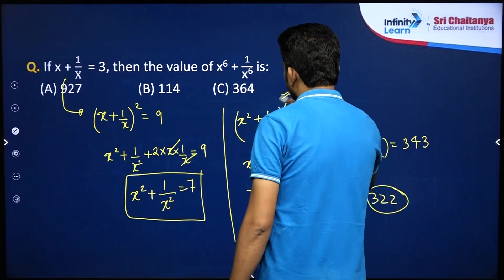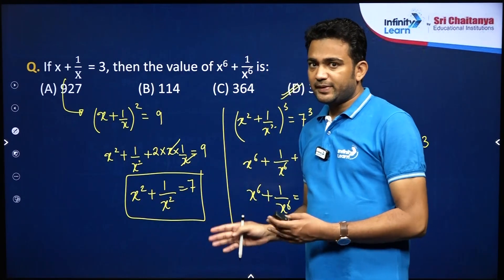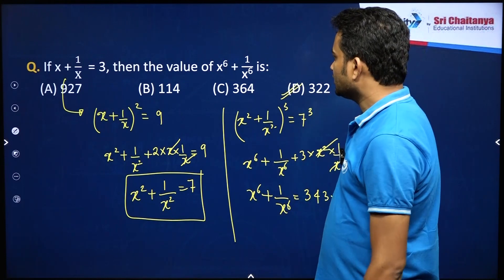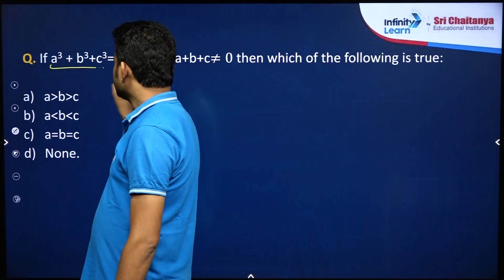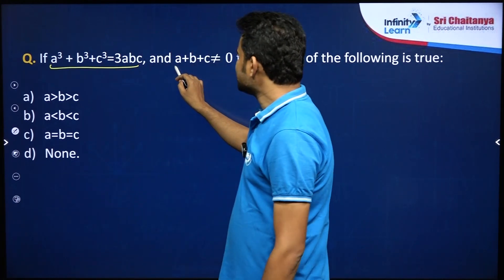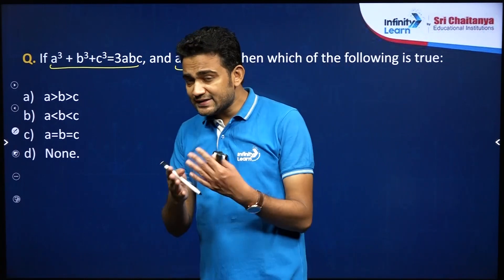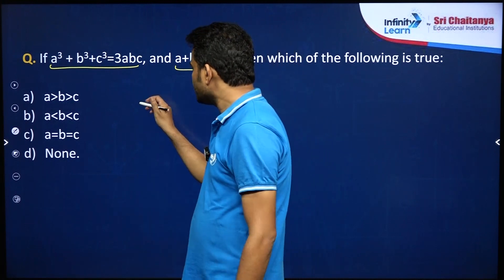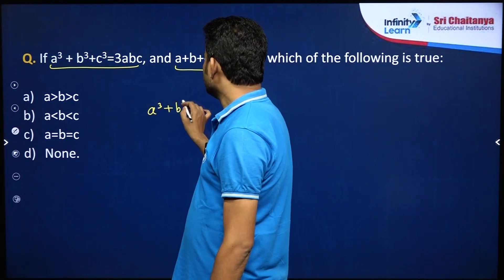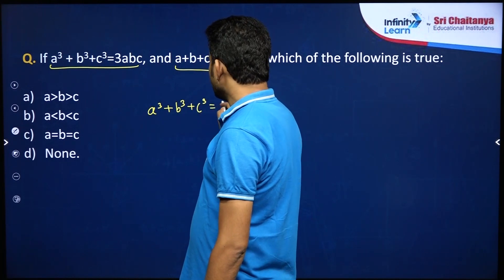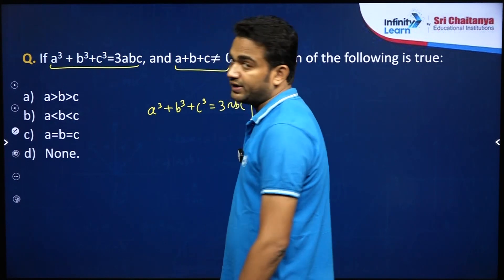So the right answer is option D. It was quite an easy question, totally based on the concept of identities. Now the next question: if a cube plus b cube plus c cube equals 3abc, and a plus b plus c is not equal to 0, then which of the following options is true? You must have already studied this — a cube plus b cube plus c cube equals 3abc happens in two conditions.